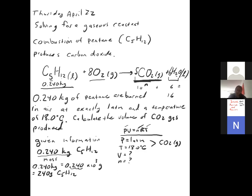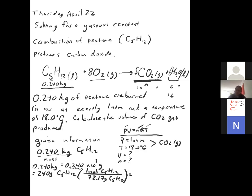So we divide by the molar mass. One mole of pentane: 5 carbons times 12.01 plus 12 hydrogens times 1.01 gives 72.17 grams per mole. So 240 divided by 72.17 gives 3.325 moles of pentane.